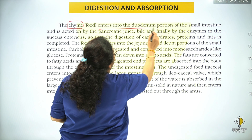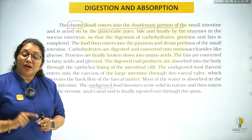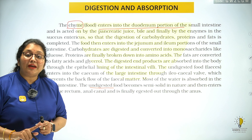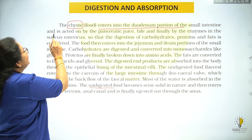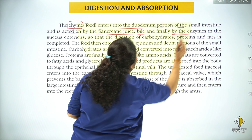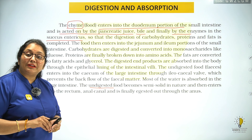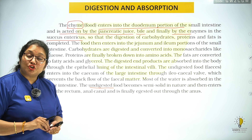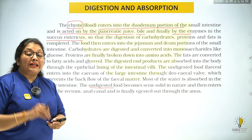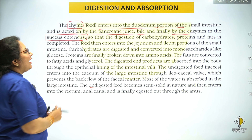Food enters the duodenum portion of the small intestine and is acted upon by pancreatic juice, bile juice, and finally by the enzymes in the succus entericus. Food pancreas se aane wale pancreatic juice se, liver se aane wale bile juice se, aur intestine ke khud ke juice succus entericus se milta hai.